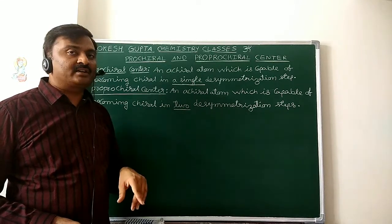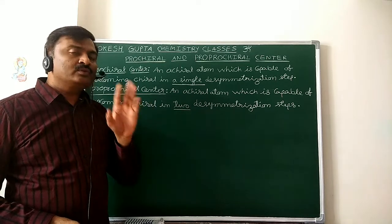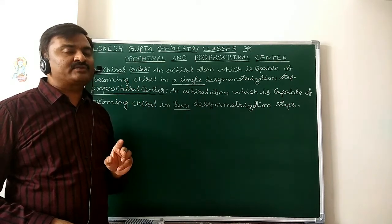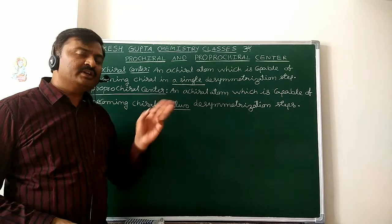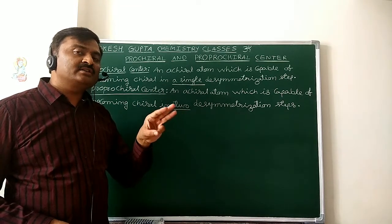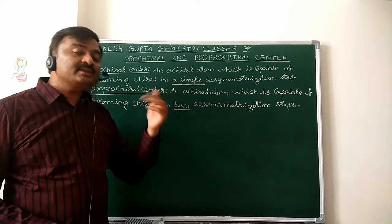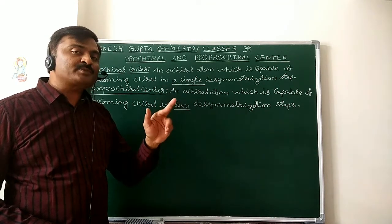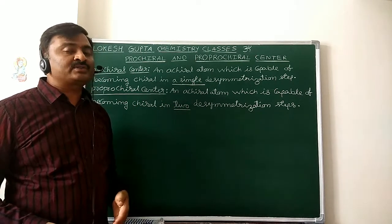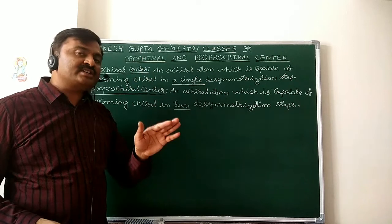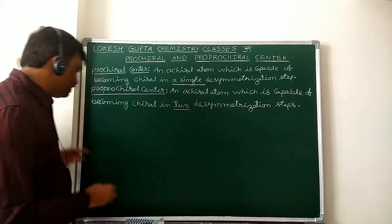Next, Pro Pro Chiral. It will be attached such that only two types of atoms are present: one atom of one type and the remaining three atoms are the same type. From those three identical atoms, if you substitute two with two different atoms, it becomes chiral. Such an atom is called Pro Pro Chiral.